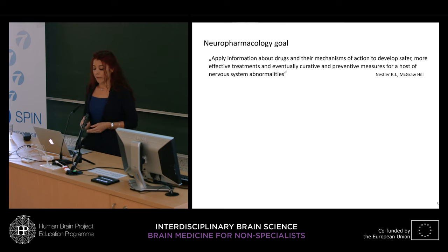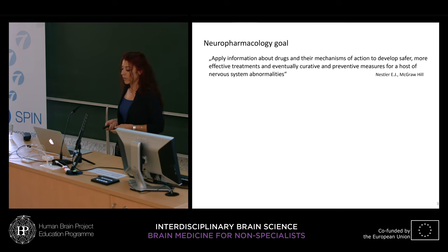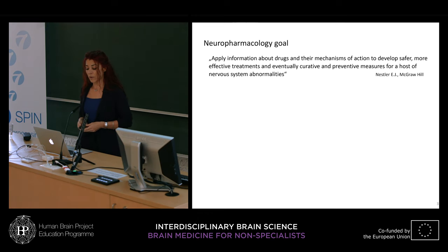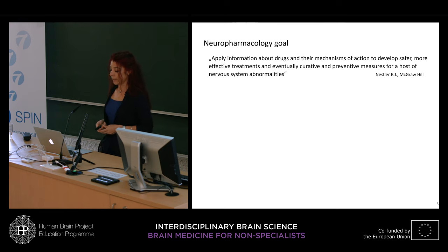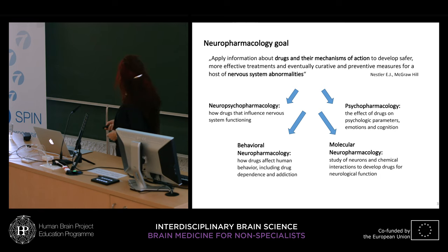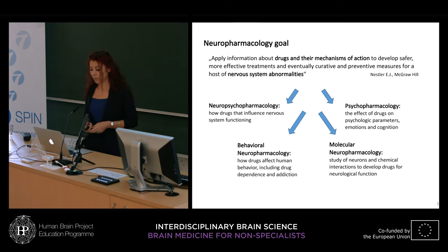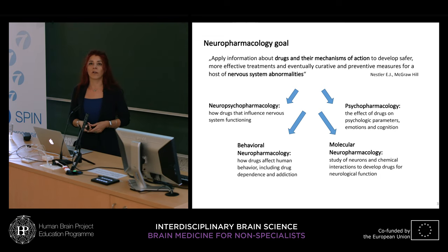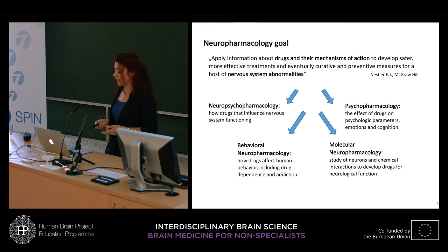The neuropharmacology goal is to apply information about drugs and their mechanisms of action to find more effective treatments for diseases affecting the nervous system and producing abnormalities. The classification of neuropharmacology is very various — its branches include neuropharmacology, psychopharmacology, behavioral neuropharmacology, and molecular neuropharmacology — all dealing with finding new drugs and how these drugs affect the human body.